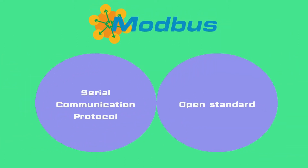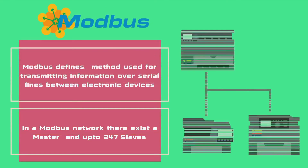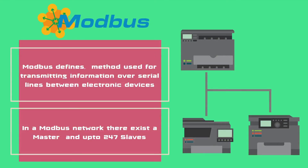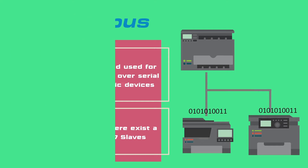We know two things about Modbus: it is a serial communication protocol and it is an open standard — a royalty-free, non-proprietary protocol. In other words, Modbus defines methods used for transmitting information over serial lines between electronic devices. In a Modbus network, there exists a master and up to 247 slaves.